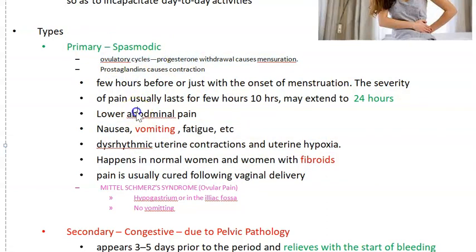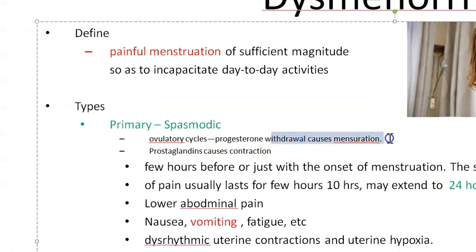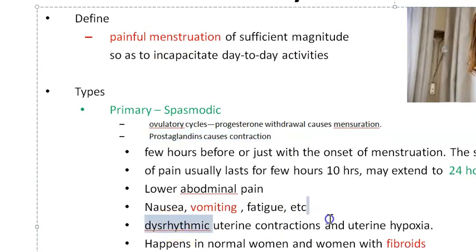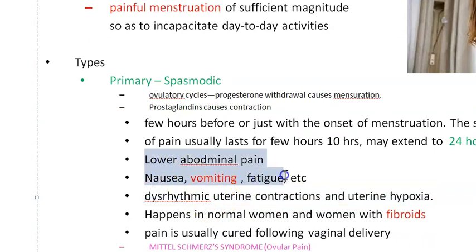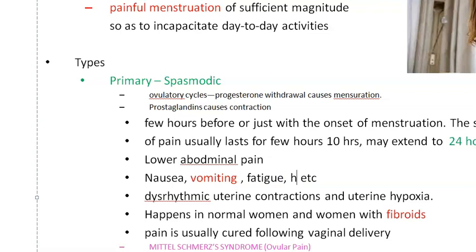Primary dysmenorrhea happens in ovulatory cycles. Once ovulation happens, the corpus luteum makes progesterone, and once there is progesterone withdrawal, menstruation begins. At this time prostaglandins are present and cause contractions of the uterus, leading to dysrhythmic uterine contractions and uterine hypoxia — this leads to pain. Symptoms include lower abdominal pain, nausea, vomiting, fatigue, headache, and diarrhea.